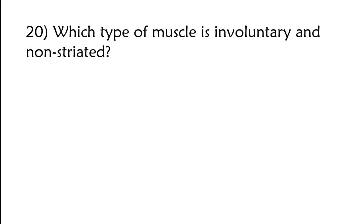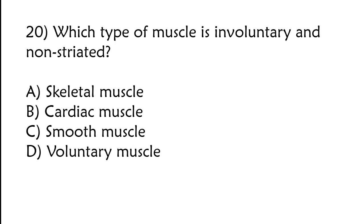Which type of muscle is involuntary and non-striated? Skeletal muscle, cardiac muscle, smooth muscle, or voluntary muscle. The correct answer is option C, smooth muscle.